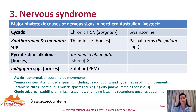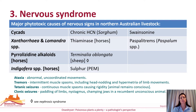Nervous signs are another common syndrome of plant poisonings, with ataxia being the most common clinical presentation. Ataxia is typically defined as the presence of abnormal and uncoordinated movements, resulting in the animals appearing unsteady and having a staggering gait. Although this is strictly a neurological disorder due to damage to the spinal cord or cerebellum, clinically ataxia may be difficult to differentiate from weakness or other gait abnormalities due to non-neurological causes. Less commonly, we may see tremors or seizures associated with plant toxicoses.